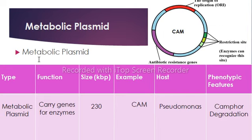Then we have metabolic plasmid, which helps in the metabolism or degradation of different substances by producing enzymes. Substances like camphor and toluene sugar can be degraded by bacteria through these enzymes. Metabolic plasmids also play a vital role in nodule formation and nitrogen fixation through Rhizobium bacteria. Camphor degradation is carried out by some soil bacteria depending on their species.